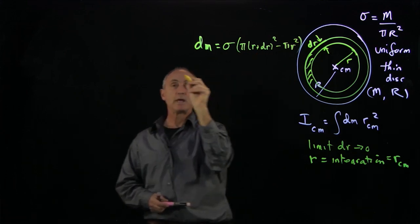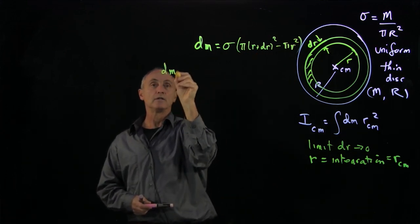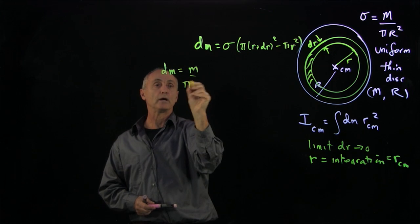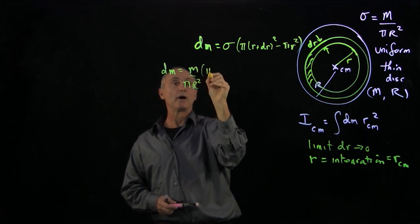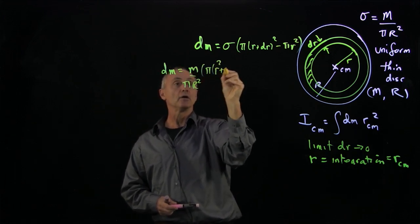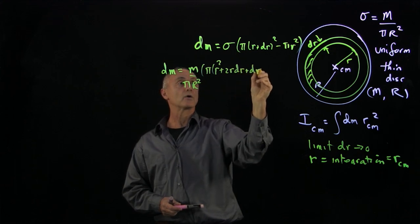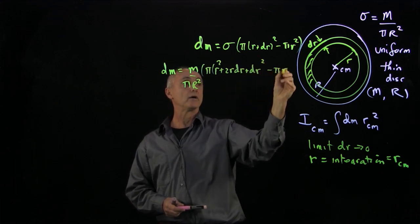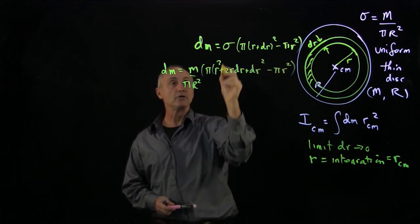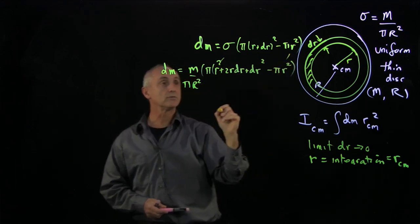Now when we expand this out, dm equals m over πr² times π(r + dr)² minus πr². And you can see those terms cancel.